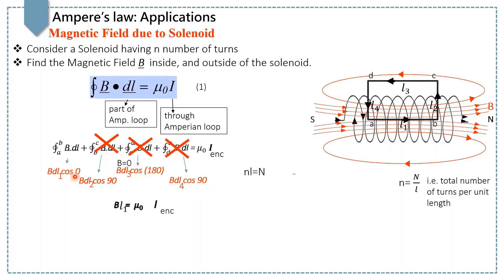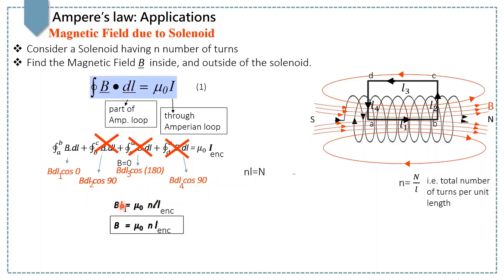So we can write BL1 equals mu naught I enclosed. Because there are n turns per unit length of the solenoid and each turn carries current I, the total current enclosed by this Amperian loop becomes nL1·I. Substituting, we get BL1 equals mu naught nL1 I, and the length L1 cancels on both sides. Finally, we get B equals mu naught nI, and this is the magnetic field inside the solenoid.